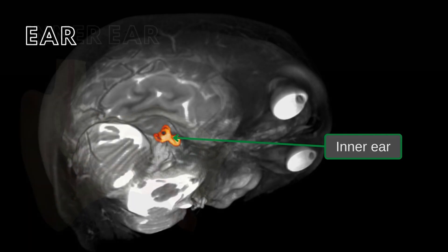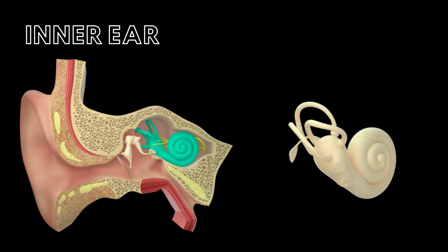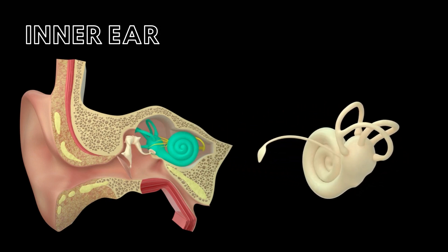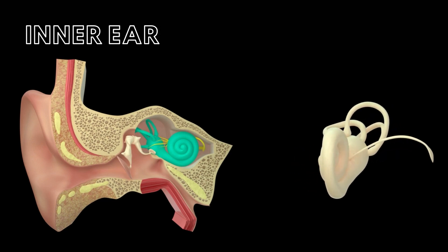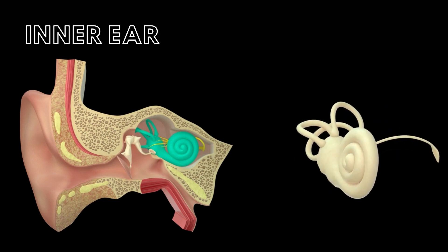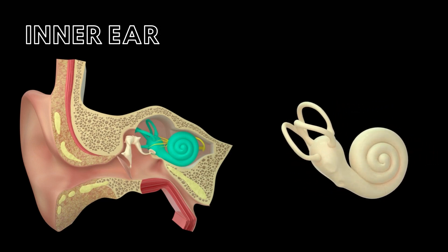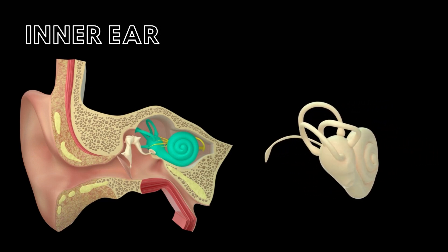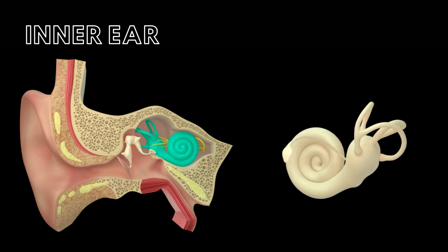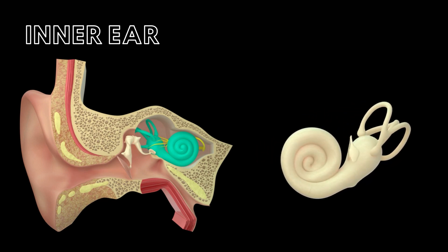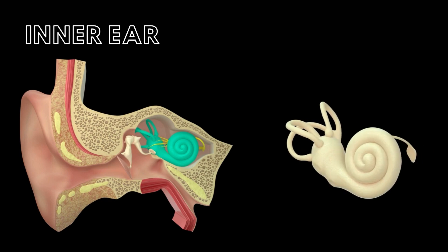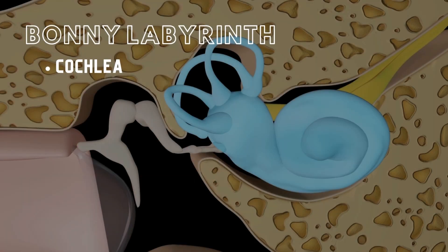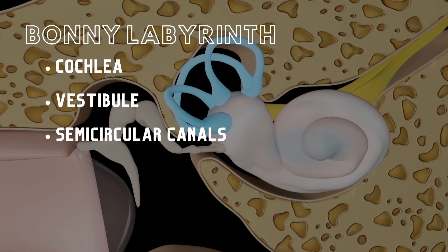The inner ear contains sensory receptors for hearing and equilibrium. It consists of a series of interconnected fluid-filled sacs and ducts. These sacs and ducts are suspended within a bony labyrinth of the temporal bone. The bony labyrinth is composed of the cochlea, vestibule, and three semicircular canals.